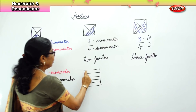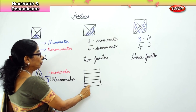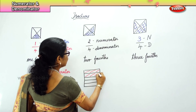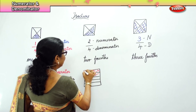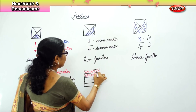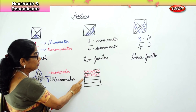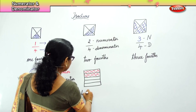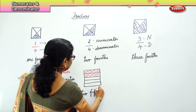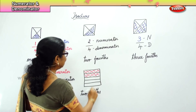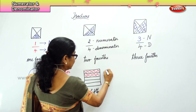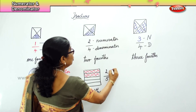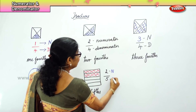Here we have 1, 2, 3, 4, 5 parts and I am going to shade 2 parts. So what do we call it? We say 2 fifths — 1, 2, 3, 4, 5 — and we call this 2 fifths. We write it as 2 parts out of 5 parts. 2 is the numerator and 5 is the denominator.